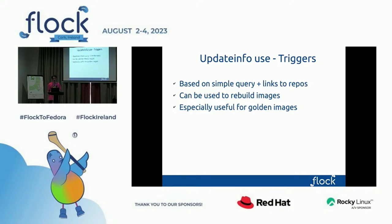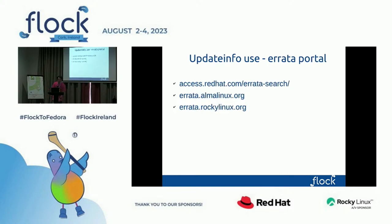It can be used to rebuild images. Normally you have to spin up a virtual machine, container, or whatever — but it takes time. In many cases you don't have access because the people who build golden images for your organization may be in a different department, like security. They just have to be given a very simple text file. It's especially useful for golden images — the type of image you use across the organization as a standard. You can also make an errata portal. Red Hat has a very nice errata portal, Alma Linux and Rocky Linux too, and all of them are actually using update info.